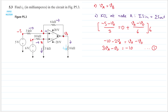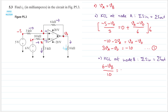Now let's do KCL at node B. KCL states that the sum of currents going in equals the sum going out. The only current going in is (6 minus vB) divided by 10. The current into the op-amp equals 0, so that equals (vB minus 0) divided by 5.